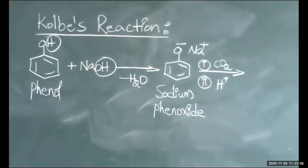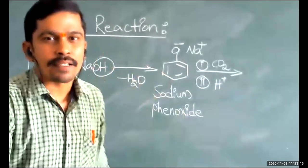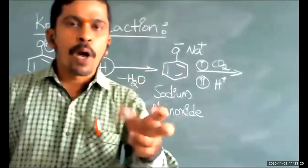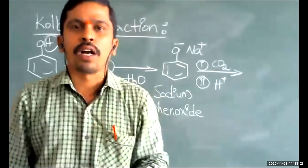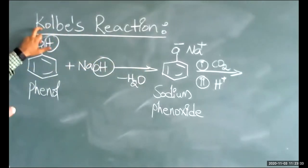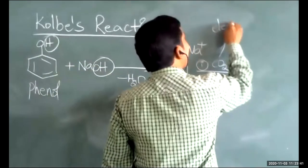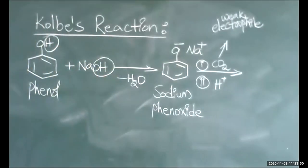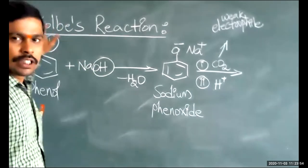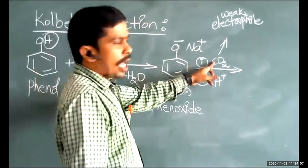Sodium phenoxide then reacts with carbon dioxide. CO2 is an example of a Lewis acid — an electron-deficient compound ready to accept an electron pair, acting as an electrophile. In Kolbe's reaction, carbon dioxide acts as a weak electrophile. This is a CET/NEET level question: in Kolbe's reaction, what is the electrophile? The answer is CO2 — carbon dioxide acts as a weak electrophile.